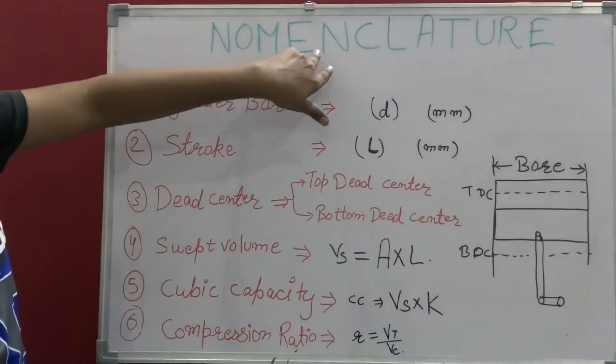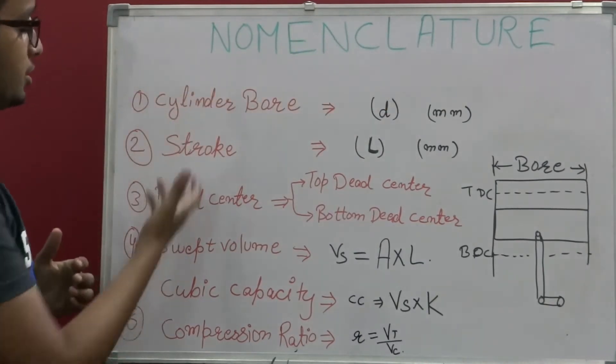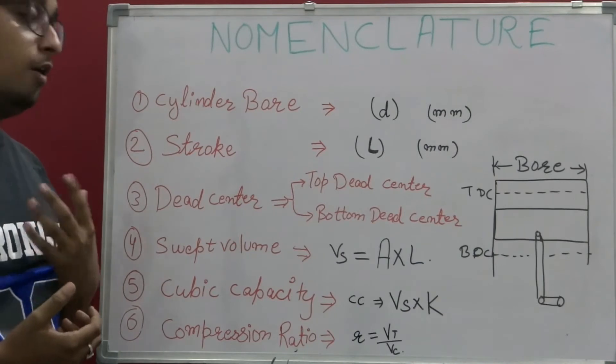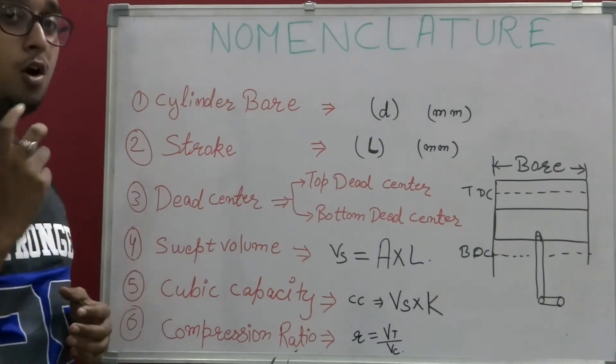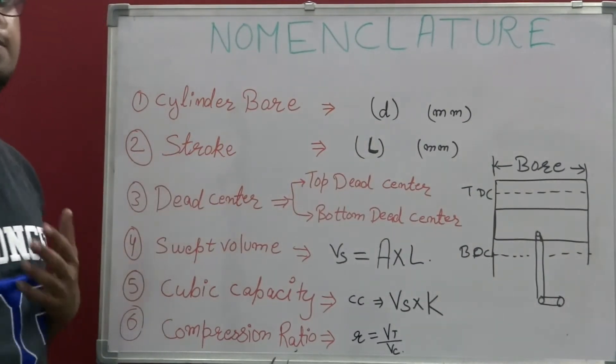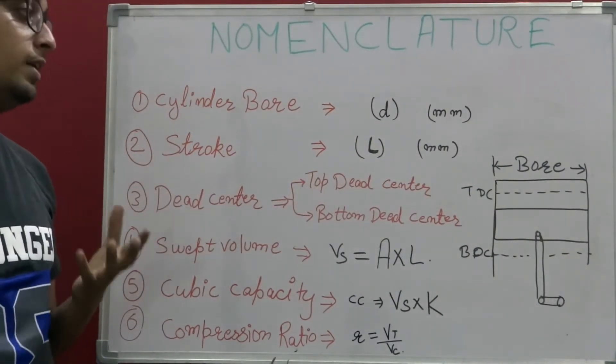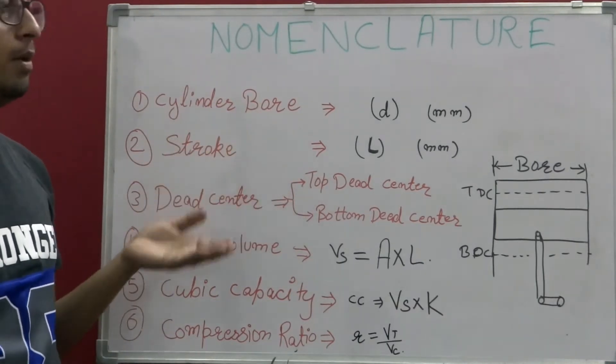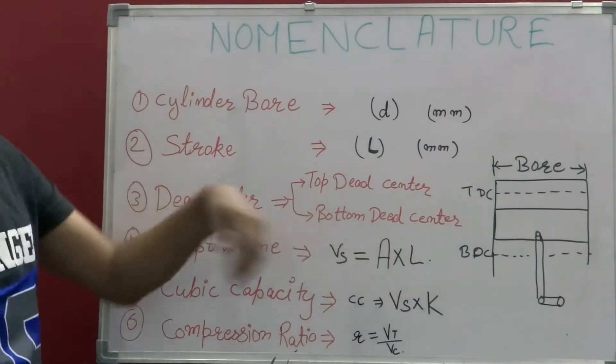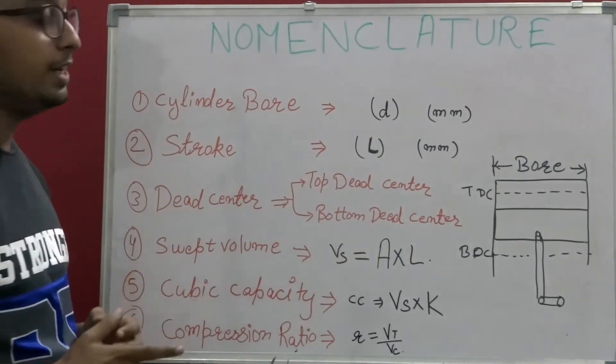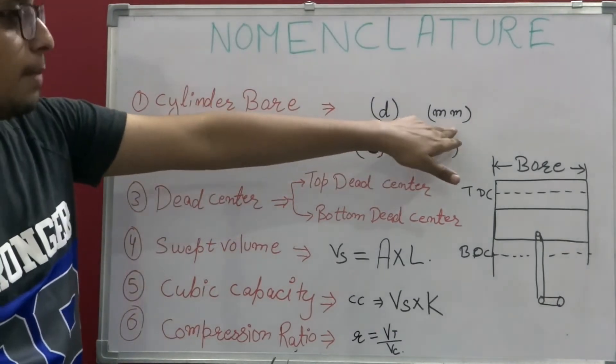In this video, the nomenclatures - some of the important nomenclatures are cylinder bore. Cylinder bore is basically the nominal diameter of an engine or a cylinder. Knowing the cylinder bore helps us in knowing the diameter and what size of an engine can be defined and what amount of bore is available in the cylinder. Basically it is denoted by a small d and expressed in mm which is millimeter.